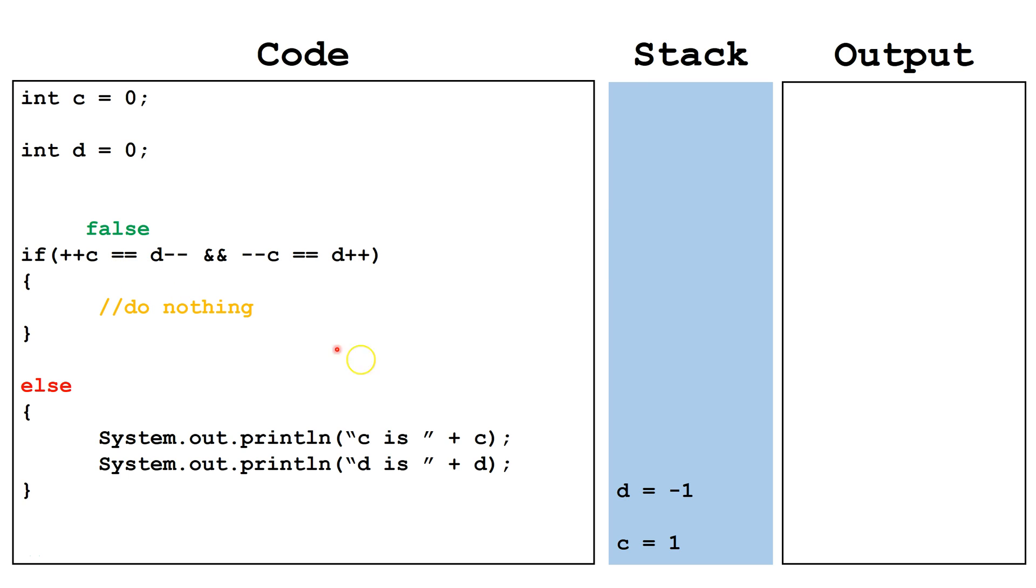After that evaluation is complete, d is decremented to negative one. In this case, since the first expression in this compound Boolean expression is false, and we are using the AND, we do not even need to check the second one. Because even if the second one evaluates to true, false and true will evaluate to false. We skip evaluating the second expression because of short-circuiting. As a result, c will never be decremented, and d will never be incremented.